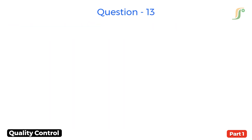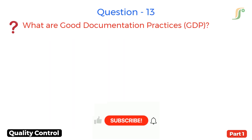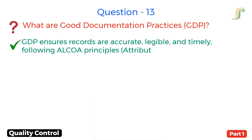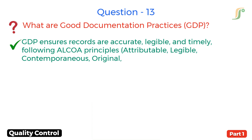Question 13. What are good documentation practices? Answer. GDP ensures records are accurate, legible, and timely, following ALCOA principles — that is: attributable, legible, contemporaneous, original, and accurate.